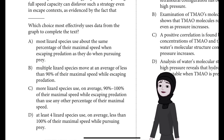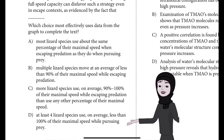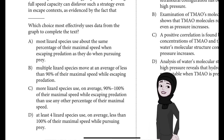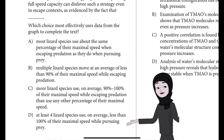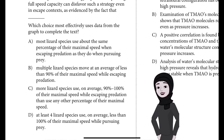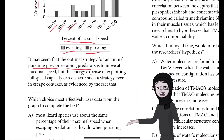Choice A: most lizard species use about the same percentage of their maximal speed when escaping predation as they do when pursuing prey. Choice B: multiple lizard species move at an average of less than 90 percent of their maximal speed while escaping predation. Choice C: more lizard species use on average 90 to 100 percent of their maximal speed while escaping predation than use any other percentage. Choice D: at least four lizard species use on average less than 100 percent of their maximal speed while pursuing prey.